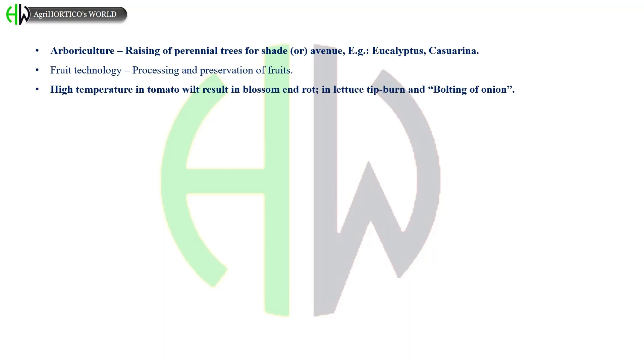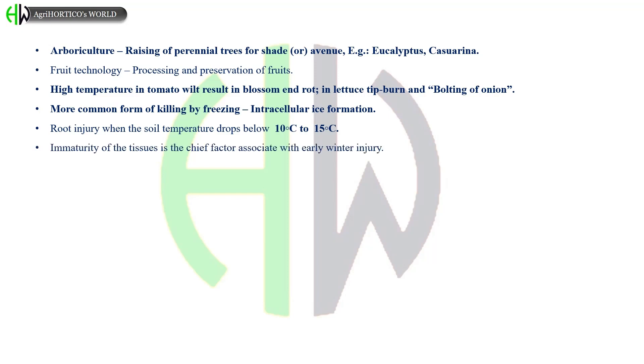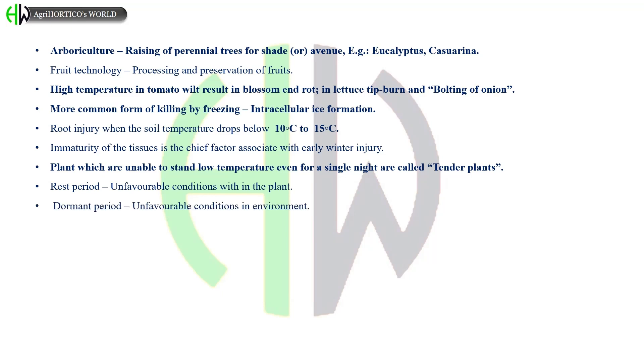High temperature in tomato results in blossom end rot, in lettuce tip burn, and in onion bolting. More common form of killing microorganisms is by freezing, that is by intracellular ice formation. Root injury occurs when the soil temperature drops below 10°C to 15°C. Immaturity of the tissues is the chief factor associated with early winter injury. Plants which are unable to stand low temperature even for a single night are called tender plants. Unfavorable conditions within the plant leads to rest period. Unfavorable conditions in environment results in dormant period.